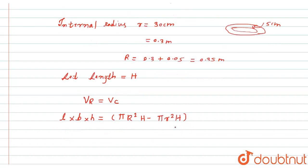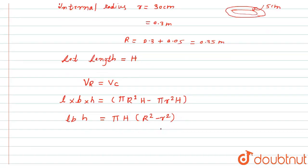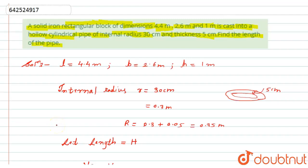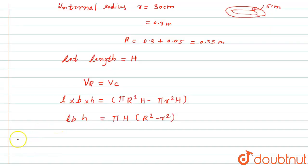Now here, in the formula, I will take common pi and H to the outside, so it will become capital R square minus small r square. Now I will simply put the values: L is 4.4 meter, B is 2.6 meter, H is 1 meter.